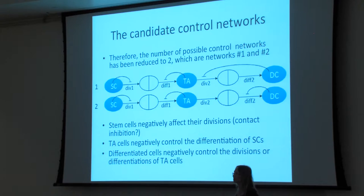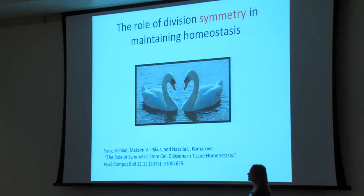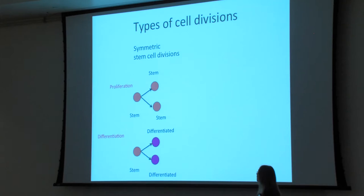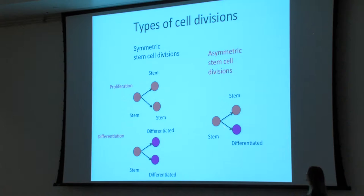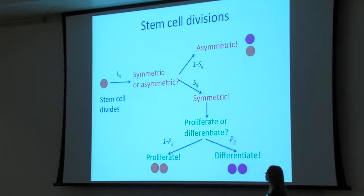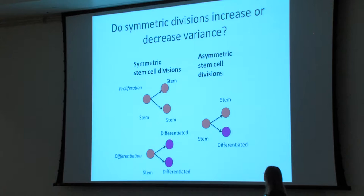Next I want to talk about symmetry of stem cell divisions. There are two symmetric types: a stem cell divides into two stem cells, or into two differentiated cells. And there is the asymmetric division, where the two offspring of a cell have different properties. When the stem cell goes through its decision tree, it must decide: do I divide asymmetrically or symmetrically? The question is: what is better under different circumstances?